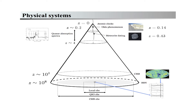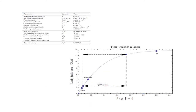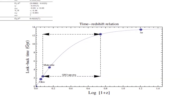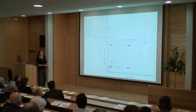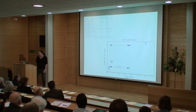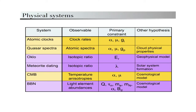The only thing we can directly measure is redshift — we cannot measure time directly. To convert to lookback time we need a cosmological model: the curvature of space, the value of the cosmological constant, the Hubble parameter. The Oklo phenomenon is about 2 billion years ago; quasar absorption spectra give information up to about 12 billion years ago. This conversion between redshift and time may change slightly if we change the value of the cosmological parameters.